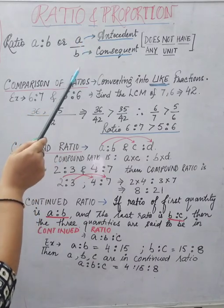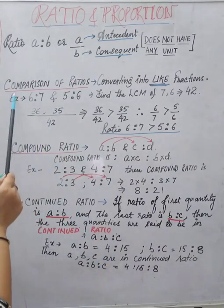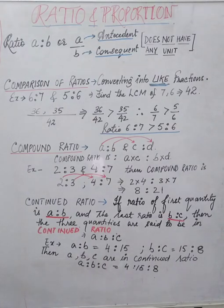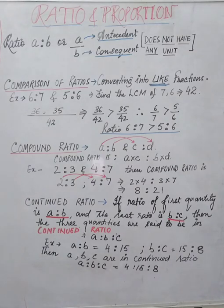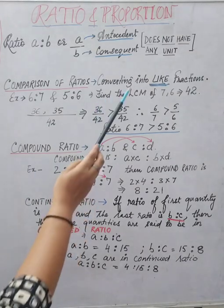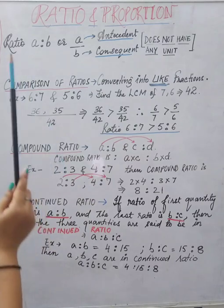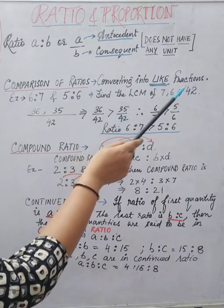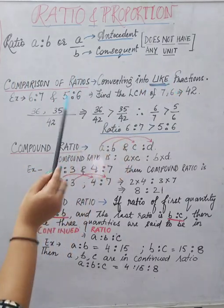Comparison of ratios: when we compare two different ratios to find which is greater and which is smaller, we do it the same way we do with fractions. Just as with fractions, we convert them into like fractions by equalizing the denominators.